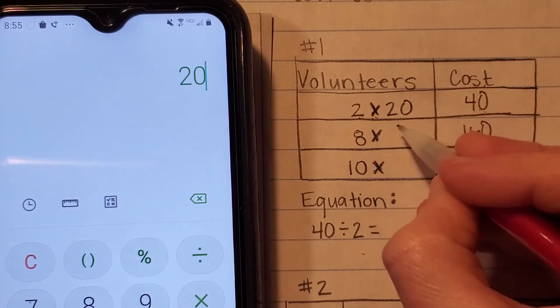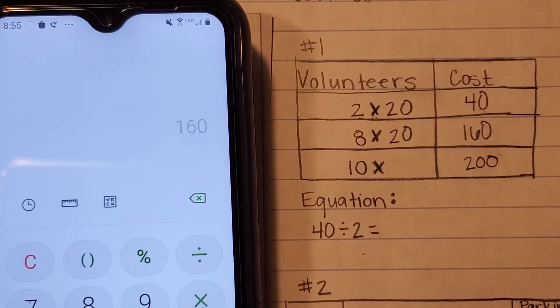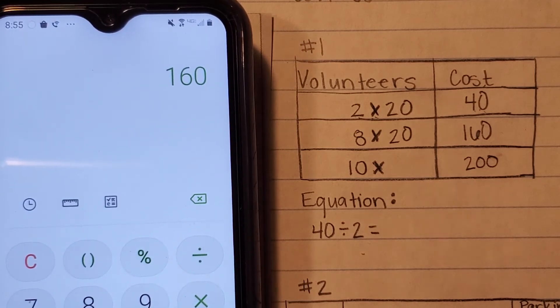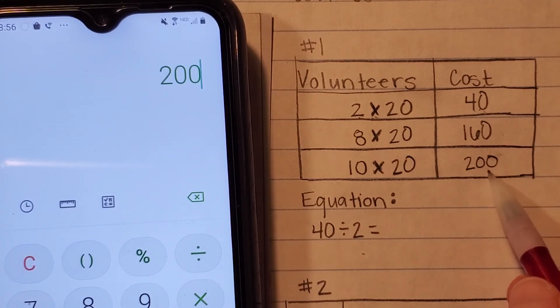Let's see if that same process works for eight. Eight times twenty is equal to one hundred and sixty and according to my table that's what I should get. Let's try it with ten. Ten times twenty is equal to two hundred. That's what it says in the table as well.